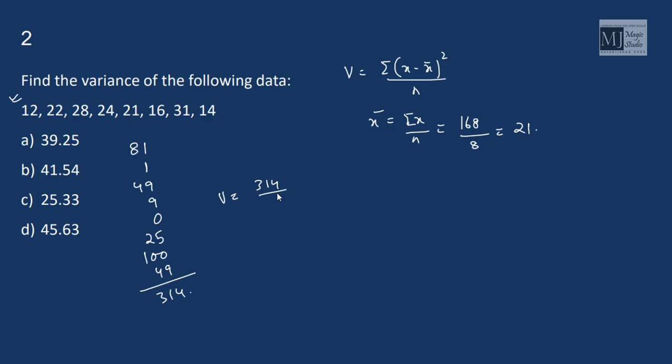Now calculating X minus X bar squared values, we get 314. So variance is 314 divided by 8. That will give us 39.25.